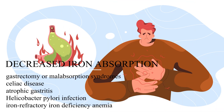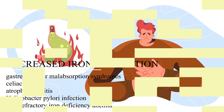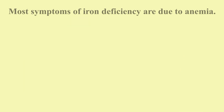Decreased iron absorption can result from gastrectomy or malabsorption syndromes such as celiac disease, atrophic gastritis, Helicobacter pylori infection, and rarely iron-refractory iron deficiency anemia. Dietary inadequacy of iron can also lead to iron deficiency anemia.